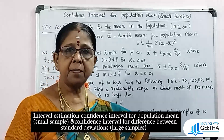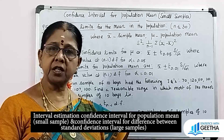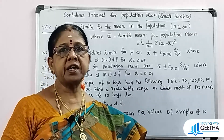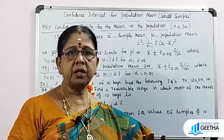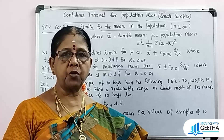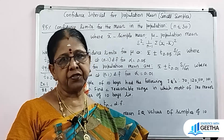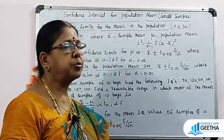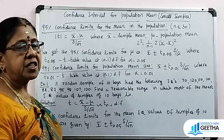In small samples, n is less than or equal to 30. Large sampling is n greater than 30, and for large samples you are going to use the normal test statistic. For small samples, we use T, F, and Chi-Square distributions. Here we are going to see the test statistic.